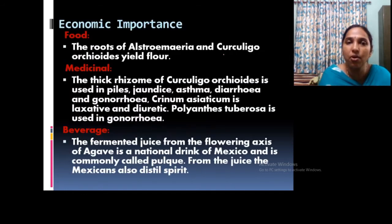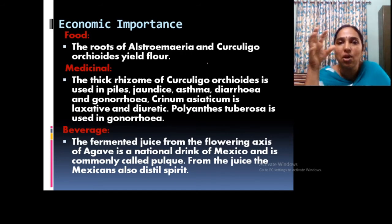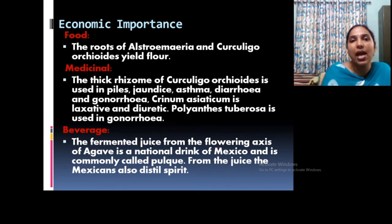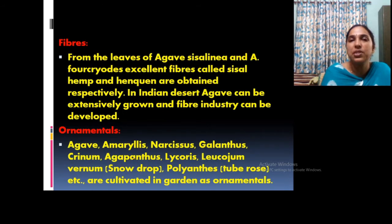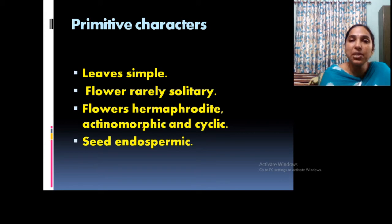Some economic importance of this family: some members are medicinal, some are used as food. Curculigo orchioides, known as Nilapana in our area, is highly medicinal — its rhizome is used for gonorrhea and diarrhea. Beverages are prepared from fermented juice from the flowering axis of Agave. Fibers are obtained from some members of Agave. Most plants of this family are ornamental — Narcissus, Galanthus, Amaryllis, Crinum, etc.